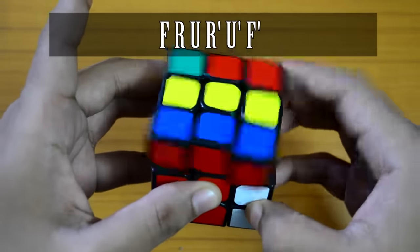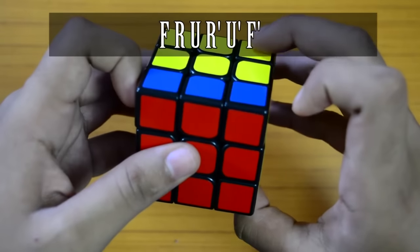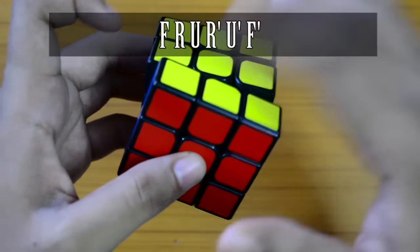Basically what that algorithm was is you do an F, then sexy move, R U R' U', and then just do an F' to solve that case.